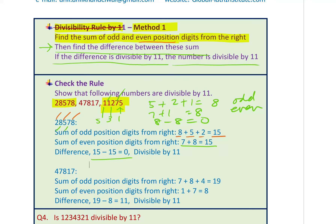Pause the video and test the next number 47817. Odd positions: 7, 8, 4 — sum is 19. Even positions: 1, 7 — sum is 8. Difference: 19−8=11. Since 11 times 1 is 11, the number is divisible by 11. To summarize: there are two sets of alternate digits from the right-hand side. Just find the difference between the sums of those alternate digits.